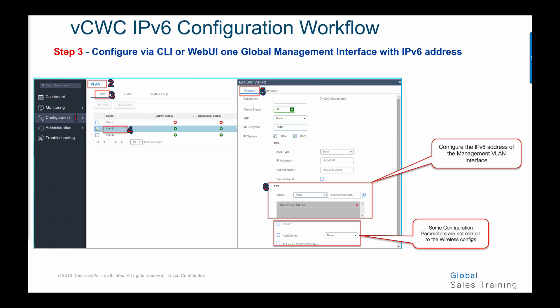Step number three: as discussed, we can configure IPv4 and IPv6 addresses on a VLAN interface or management interface. We configure VLAN marked with number two, and in the general tab you have options to configure IPv4 and IPv6, only IPv4, or only IPv6. In our case, both IPv6 and IPv4 addresses are chosen, and as shown under number six, IPv6 address has been configured on VLAN 42, which is the management interface.